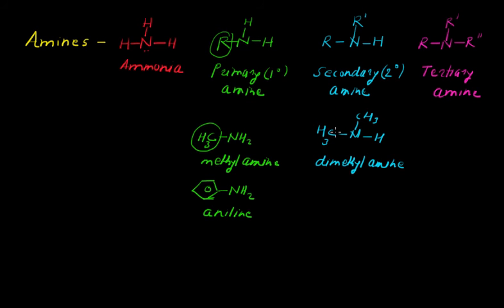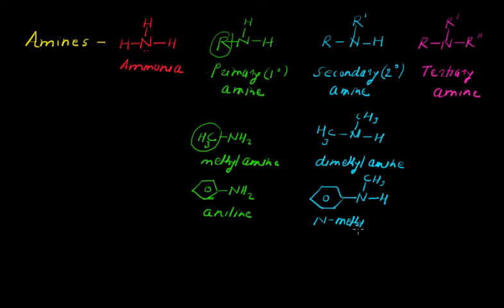We can also replace a hydrogen with one phenyl ring, giving a compound with a phenyl group, CH3, and H on nitrogen — N-methylaniline. In this case, one hydrogen is replaced by the phenyl ring and the other by a methyl alkyl group, making it an aromatic secondary amine. That is why this compound is called N-methylaniline.